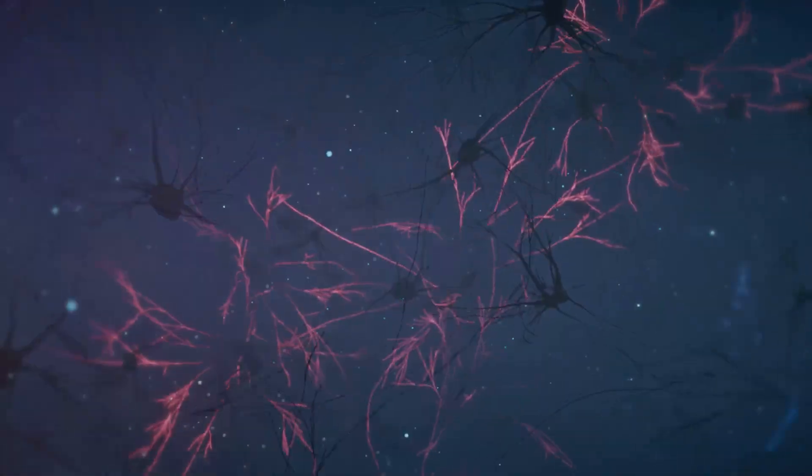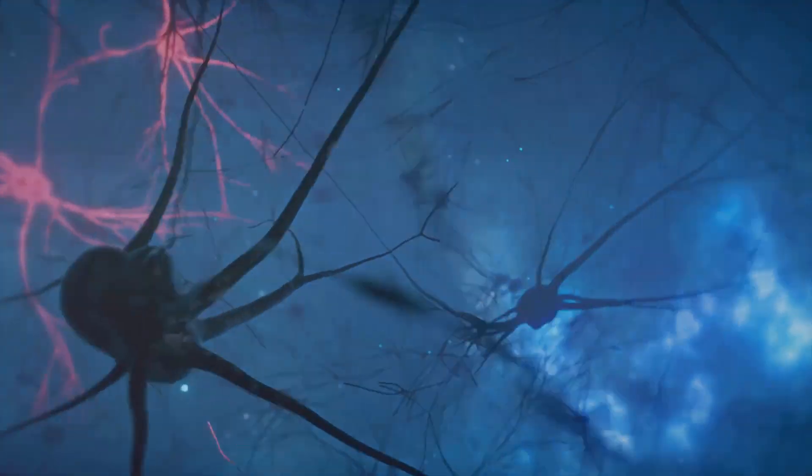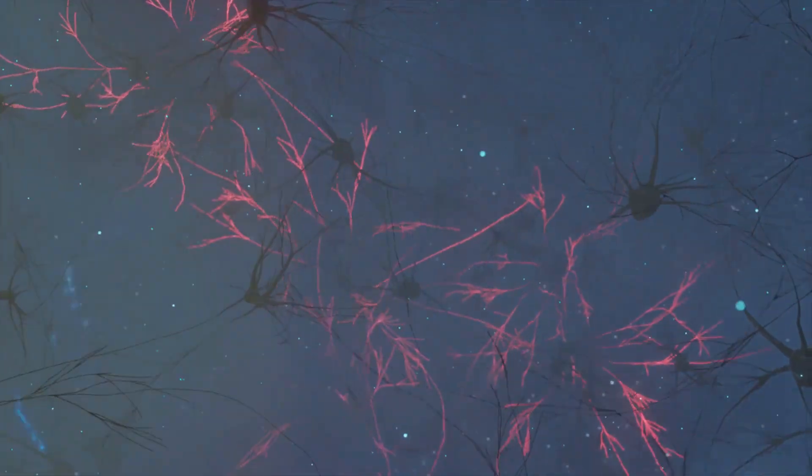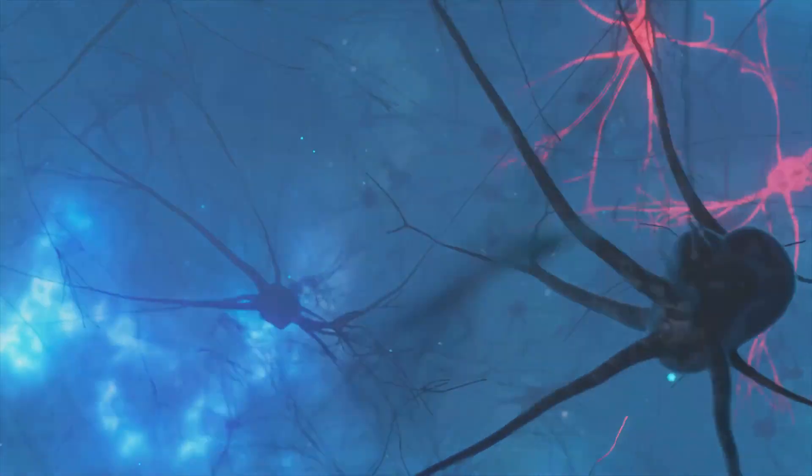In the human brain, we have approximately 100 billion neurons, each connecting to thousands of others, forming a vast network of communication. This intricate web of connections gives rise to our consciousness, our thoughts, our very sense of self.